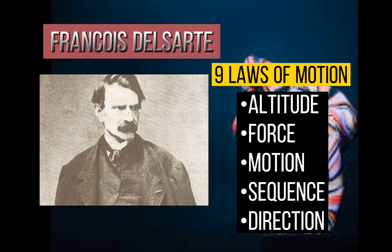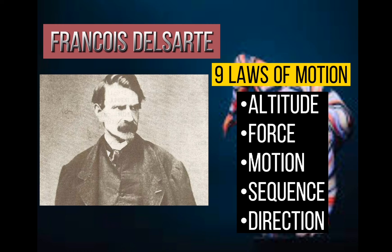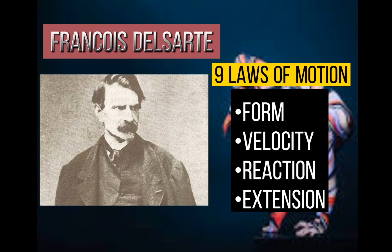We also have nine laws of motion. Altitude: the level of movement. Force: the strength or power of movement. Motion: the act or process of moving. Sequence: the order in which things happen or the sequence of movement. Direction: pathways of movement. Form: general ways. Velocity: quickness of motion. Reaction: respond to someone's action. Extension: the enlargement of movement.